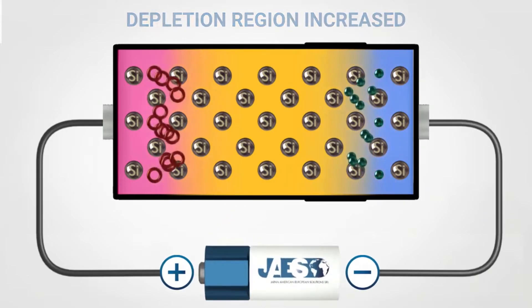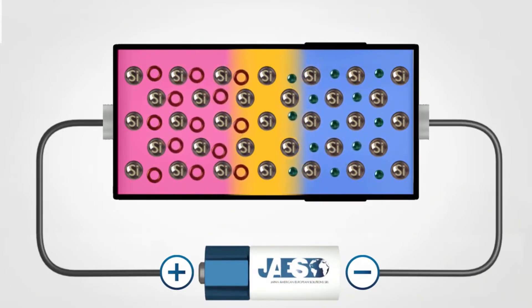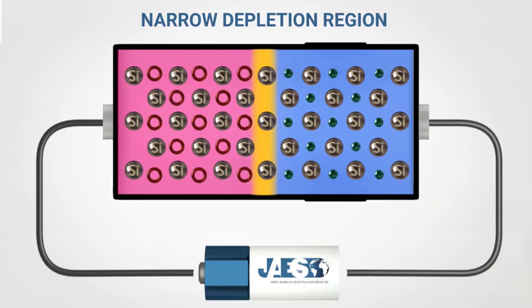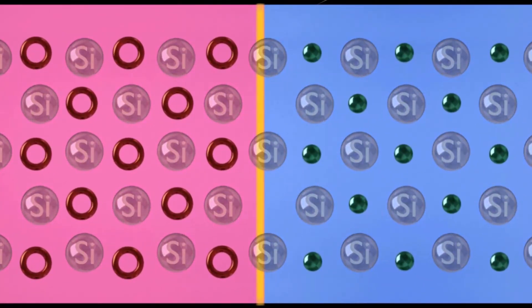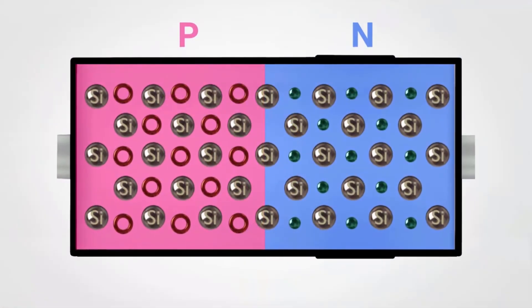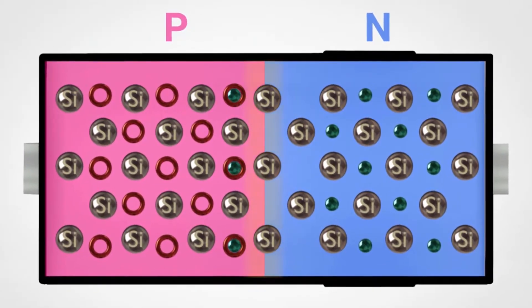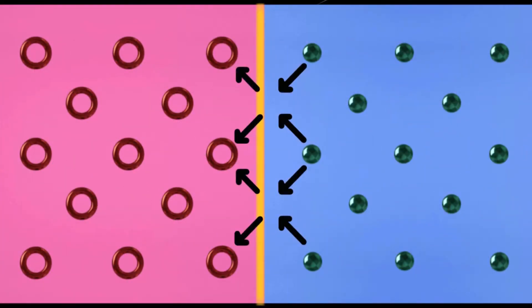By reversing the battery's pole's connection, a forward bias condition is created and the depletion region narrows. Using a battery with a higher voltage than the barrier potential, the electrons, not meeting more resistance, are able to cross the barrier and occupy the holes available on the P-side.